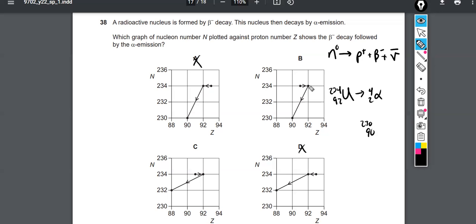So which one agrees with that? Well, here we can see that the proton number has dropped by two and the nucleon number has dropped by four. In choice C, we have the proton number dropping by four and the nucleon number dropping by two. So choice C would be if you mix those up, and so that one's incorrect. The only one that's correctly showing beta minus decay followed by alpha emission is choice B.